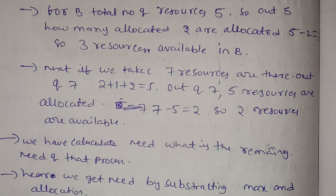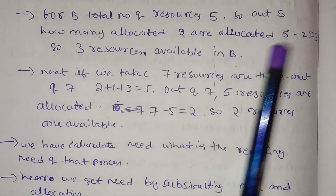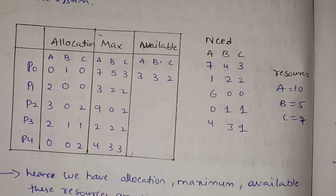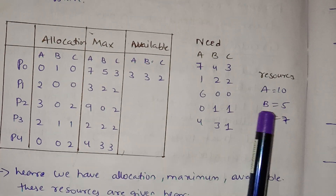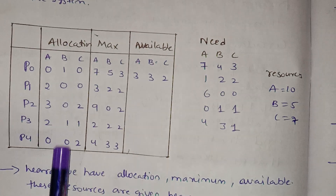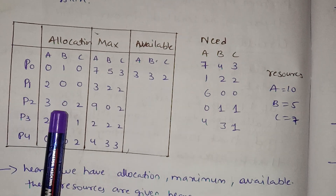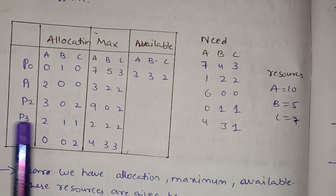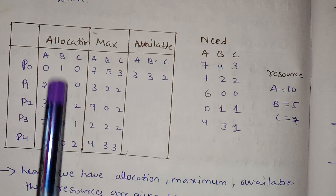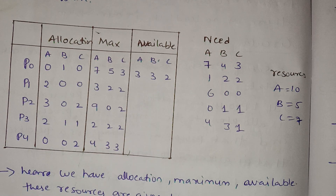For resource B, the total number of resources is 5 scanners. Out of 5, how many are allocated? 2 are allocated, so 5 minus 2 equals 3. Therefore, 3 resources are available for resource type B.